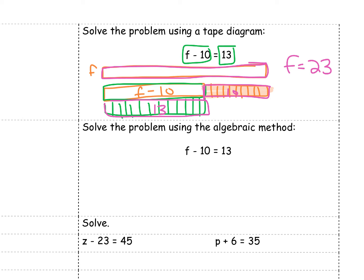Sometimes with subtraction, tape diagrams get a little confusing. And so we can also use the algebraic method. When we solve, we start with that line through our equal sign every time. This time, it says f minus 10. If I'm trying to get f alone, I need to take the minus 10 and eliminate it using my additive inverse.